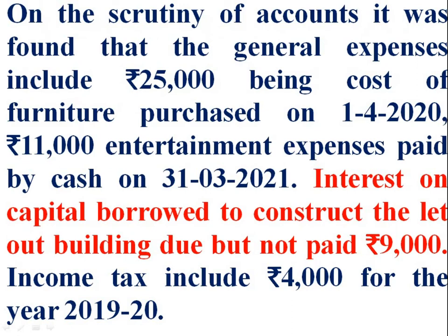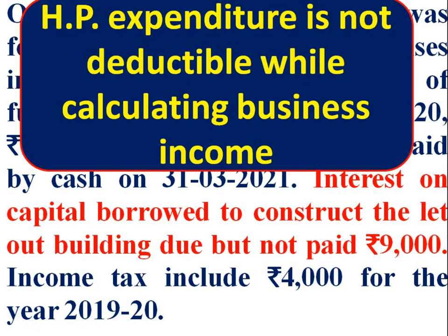Then, interest on capital borrowed to construct the let-out building — due but not paid — Rs. 9,000. This interest on loan for the construction of the let-out building is not included in the general expenses. Therefore, it is to be added back. Rs. 9,000 interest is not related to business income, so it is to be added back and will be considered while computing income from house property.